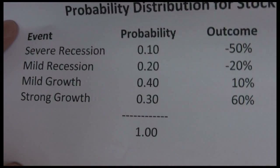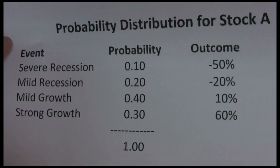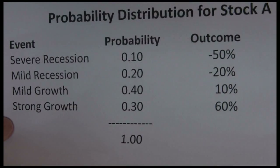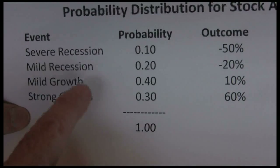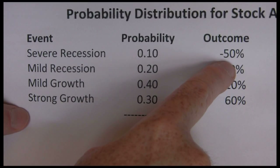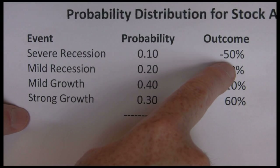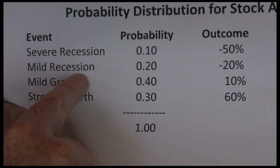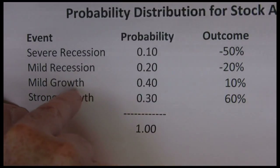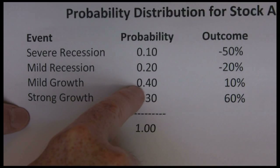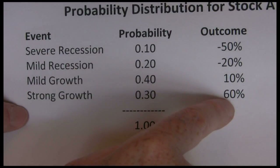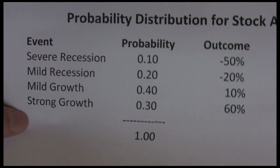Then we think about what's going to happen to the stock under each scenario. If we have a severe recession, this stock is going to lose 50% of its value — a negative 50% rate of return. In a mild recession, I think the stock will lose 20%. With mild growth, the stock should generate a 10% rate of return. And with strong growth, I think the stock will generate a 60% rate of return.